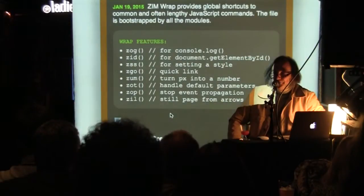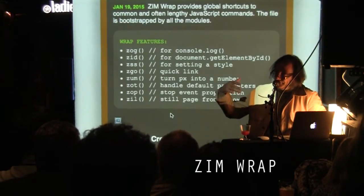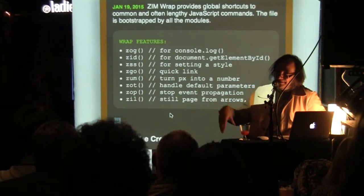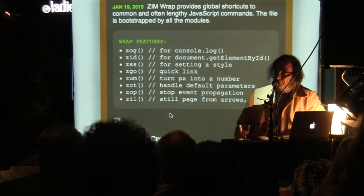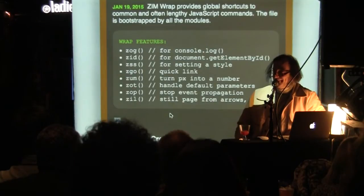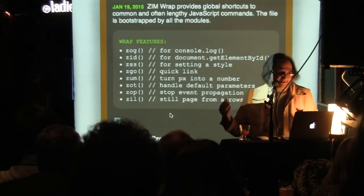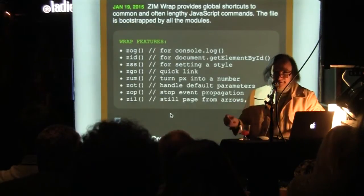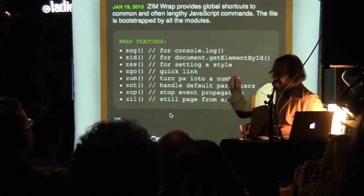You might have had to do a console.log at some point. Console.log is too long — other languages use trace or echo. In Zim, we've got Zog. Zog binds the console.log, gives you line numbers and stuff like that. You don't have to go console.log every time — you can just go Zog.